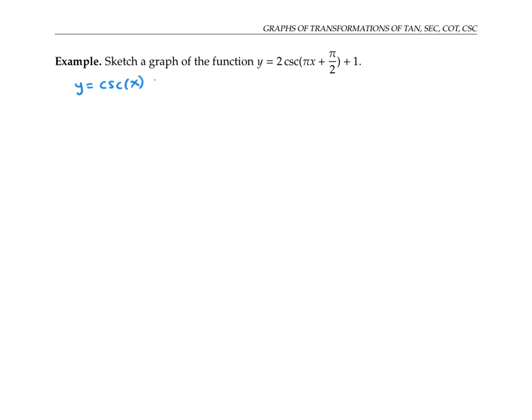Recall that cosecant of x is one over sine of x. So the graph of cosecant of x has vertical asymptotes where sine of x is zero. That puts the vertical asymptotes at pi, two pi, zero, and so on.